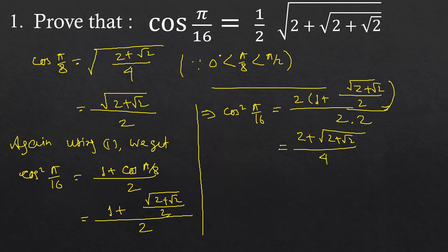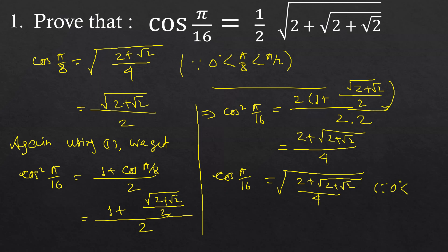But π/16 is between 0° and 90°, therefore taking the positive square root, we get cos(π/16) is equal to √(2 plus √(2 plus √2)) by 4. Since 0° < π/16 < π/2, that is 90°, from here we get cos(π/16) is equal to (1/2)√(2 plus √(2 plus √2)).